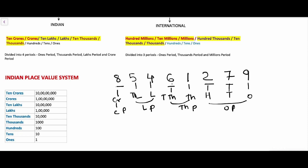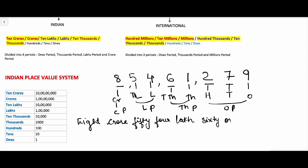This is how we write the place value of all the digits in a number. So if I want to write the number name of these digits, then: ones, tens, hundreds, thousands, ten thousands, lakhs, ten lakhs, and crores — this will be eight crore fifty-four lakh sixty-one thousand two hundred seventy-nine.